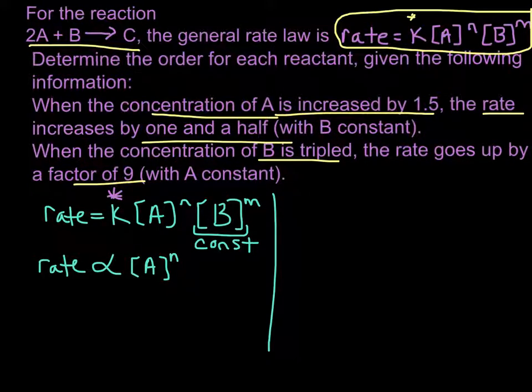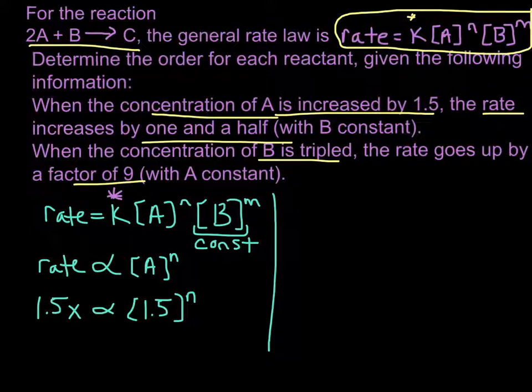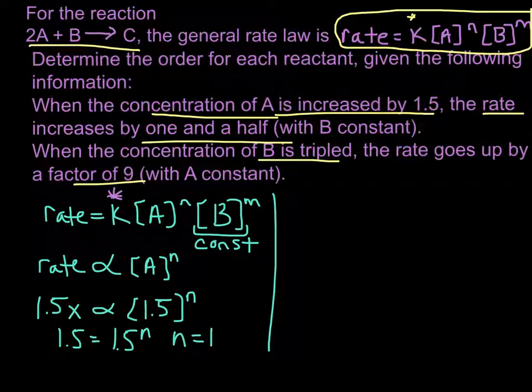So we're told that when we increase the concentration of A by 1.5, then we get a rate that increases by one and a half, which is 1.5 times. So the only number that we can put in for n, for the order of A, that makes this statement true, 1.5 equals 1.5 to the n power, is if n is equal to 1. So anytime you see the concentration increased by some factor and the rate goes up by the same factor, that means that the reactant is first order in the reaction.